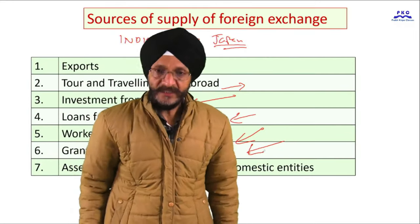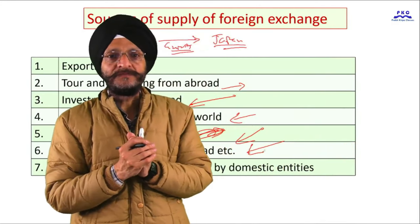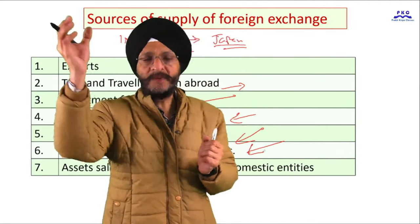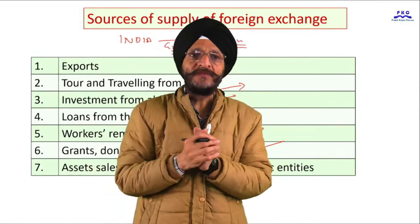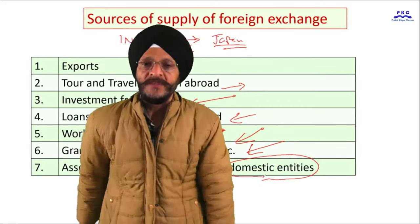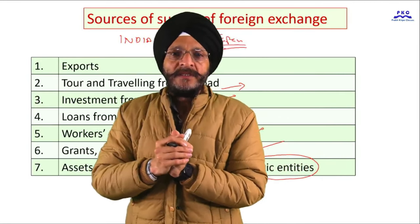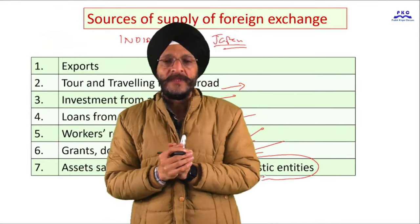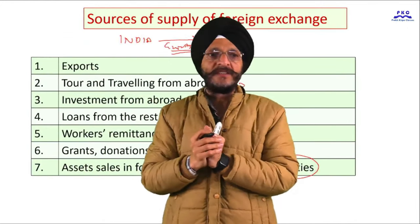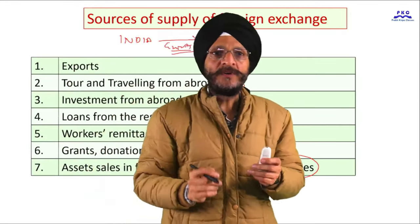Sometimes our country receives grants and donations from abroad, whether as unilateral transfers, grants for investment purposes, or donations for specific purposes — these also result in the supply of foreign exchange. Finally, if domestic business houses sell their properties or businesses abroad, they receive foreign currency, which also results in a supply of foreign exchange.